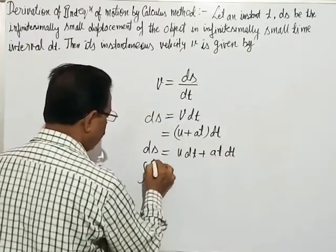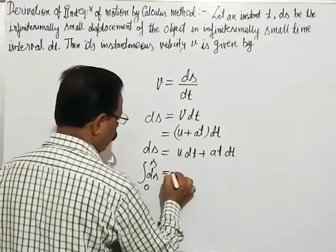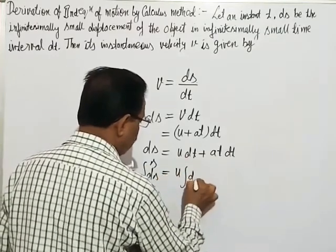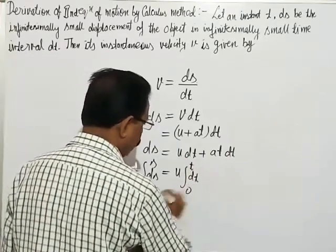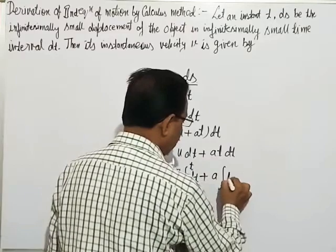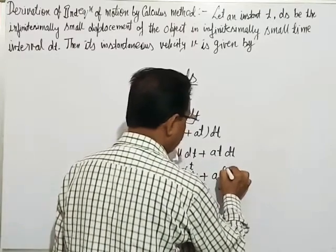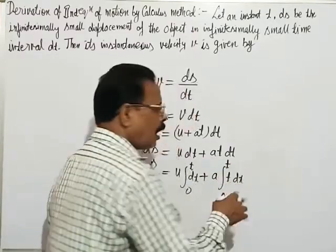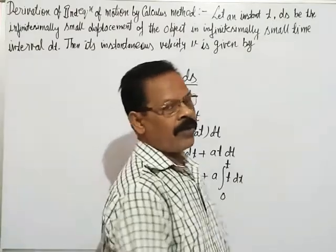Integrating from 0 to s: ∫ds from 0 to s equals ∫u dt from 0 to t plus ∫at dt from 0 to t. Since u is constant and a (acceleration) is constant, we can integrate using the first equation of motion formula.